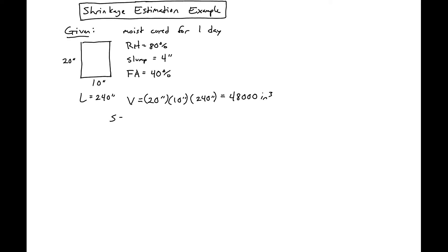Our surface area is 20 inches times 10 inches for our ends times 2, plus the length which is 240 inches times the perimeter, which involves two 20 inch sides and two 10 inch sides. This equals 14,800 square inches.